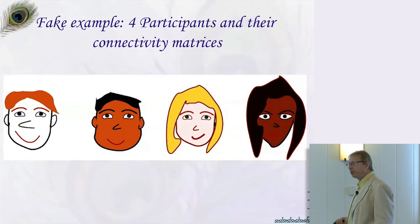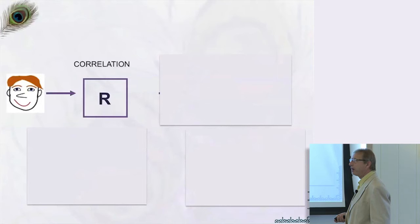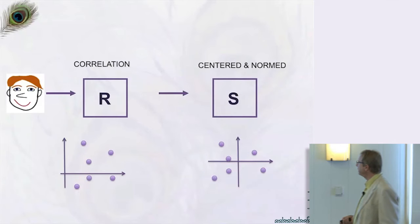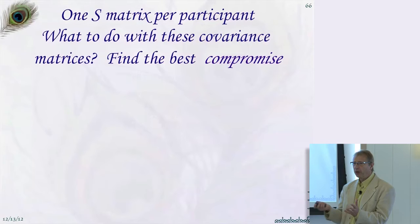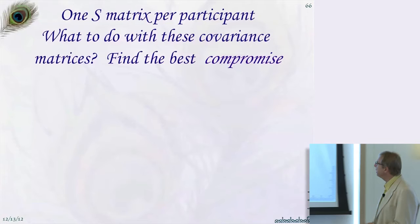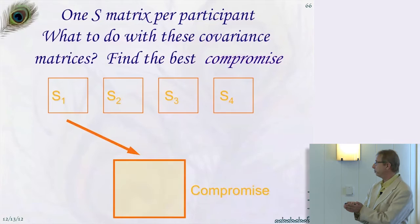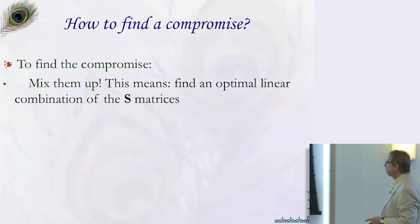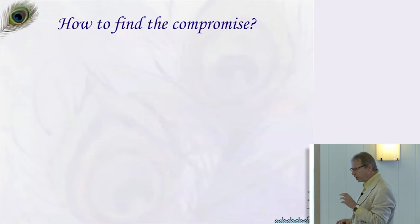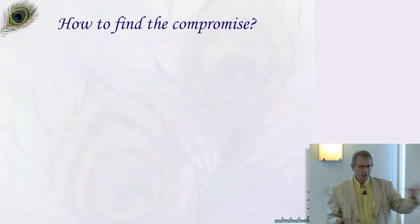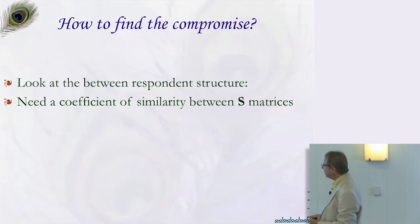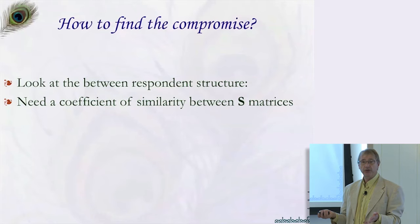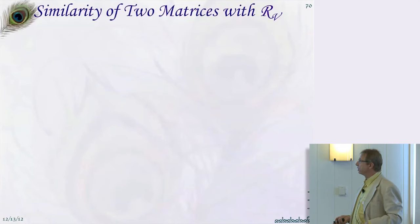For a picture tour: suppose we have four people and four connection matrices. We center and normalize each matrix. Then we integrate them — computing something like a weighted mean called a compromise, which is a linear combination. We want that combination to be optimal: if a participant looks like everybody else, give them a strong weight; if they are an outlier, still include their data but with a lower weight.